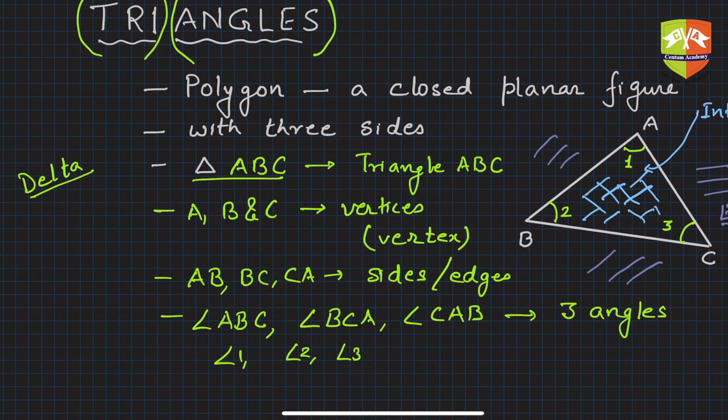What did we learn? Triangle is a polygon, a closed planar figure. It has a boundary, so it divides the plane into three parts: interior, exterior, and the triangle itself. It is bound by three sides.